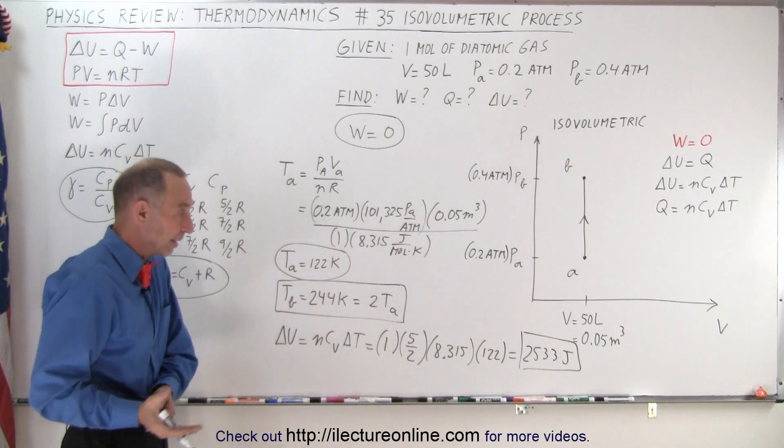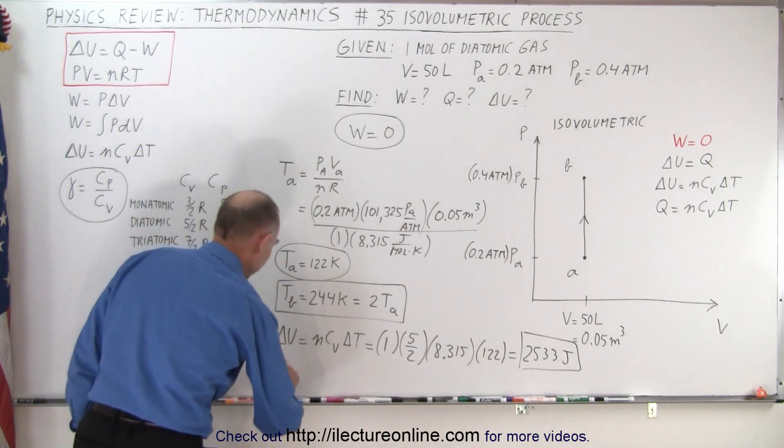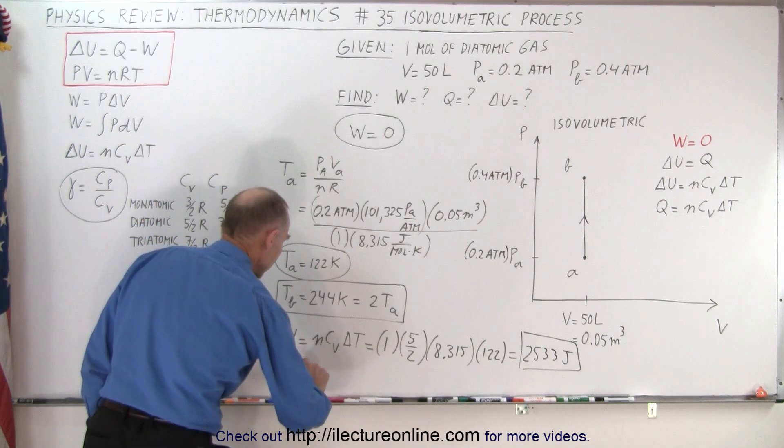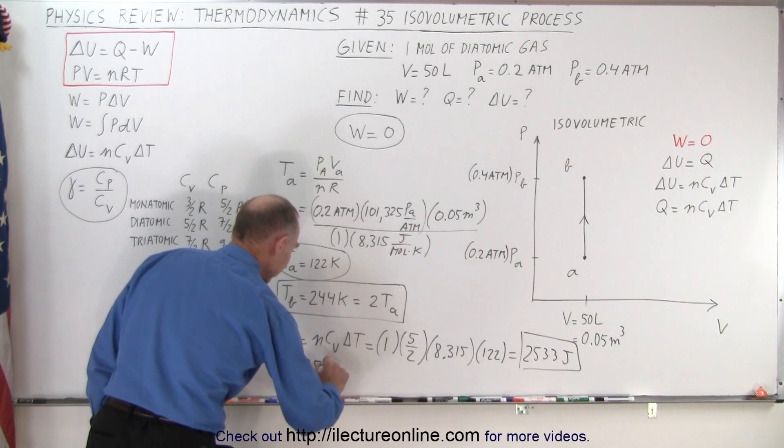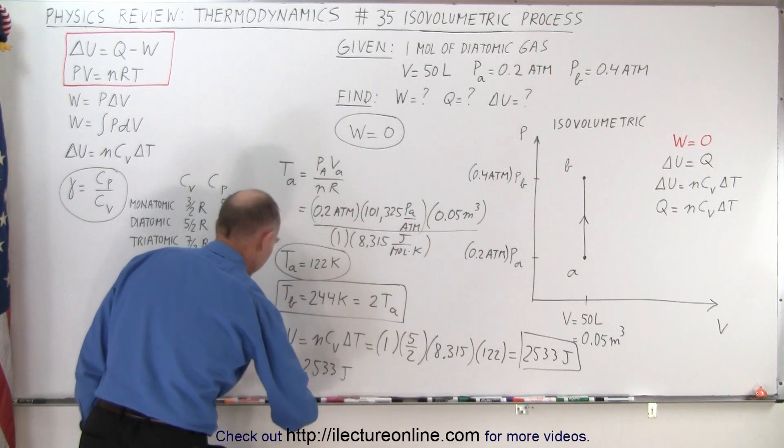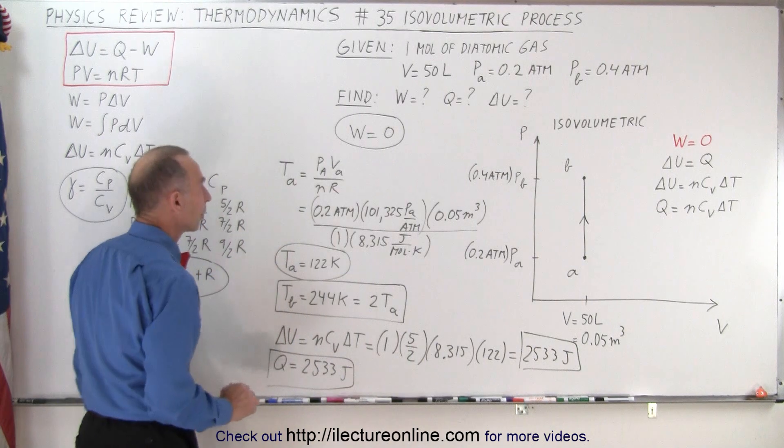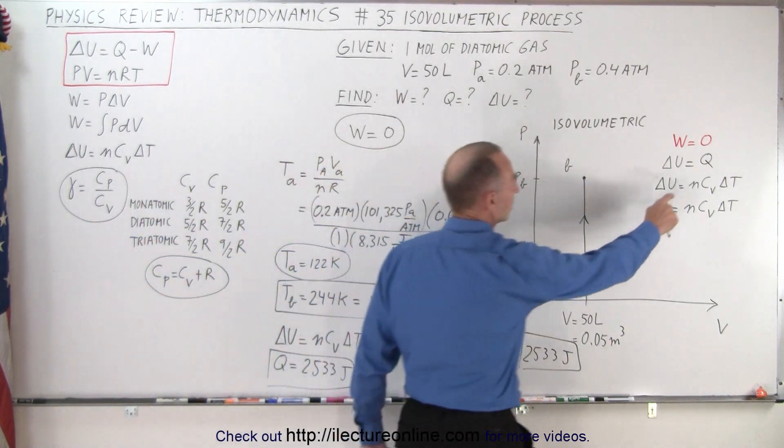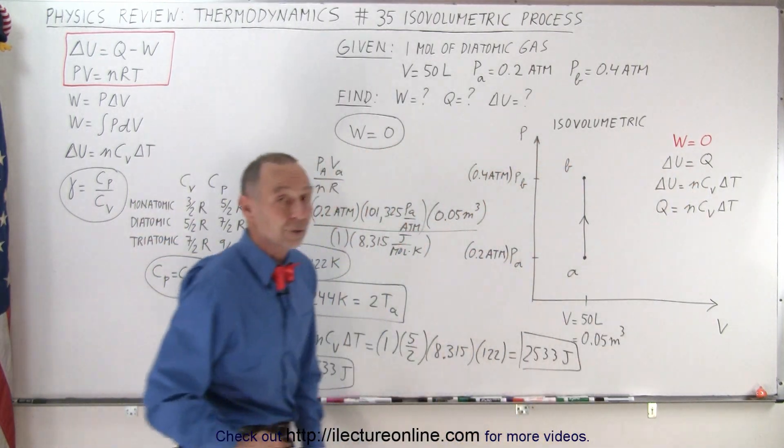And therefore Q is also going to be 2533 Joules because they must be equal to one another. That's what we know from the isovolumetric process.